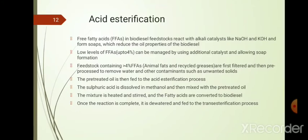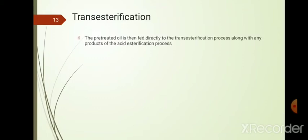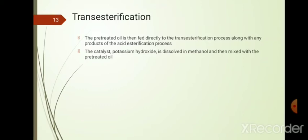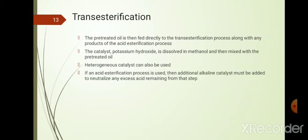Once acid esterification is complete, the oil is de-watered and fed to the transesterification process. Catalysts such as potassium hydroxide or sodium hydroxide are dissolved in methanol and mixed with the pre-treated oil. Heterogeneous catalysts like cerium oxide can also be used. If acid esterification was used, additional alkaline catalyst must be added to neutralize any excess acid remaining from that step.